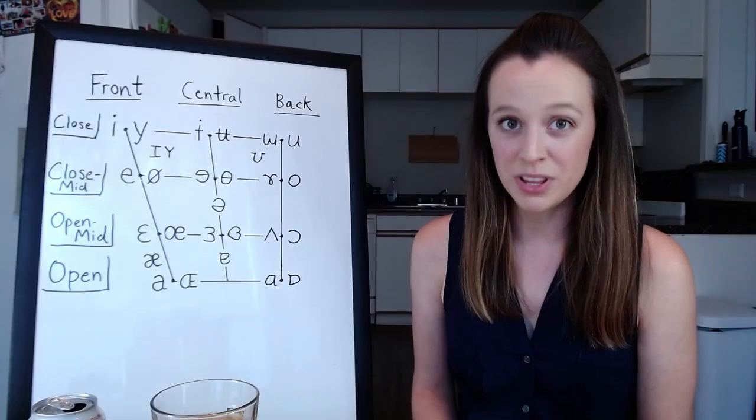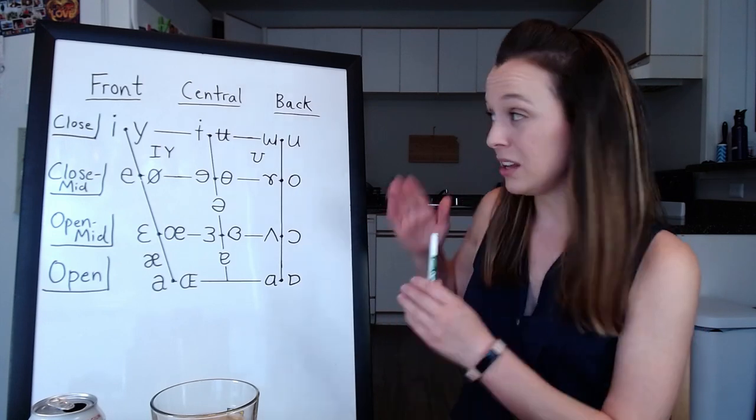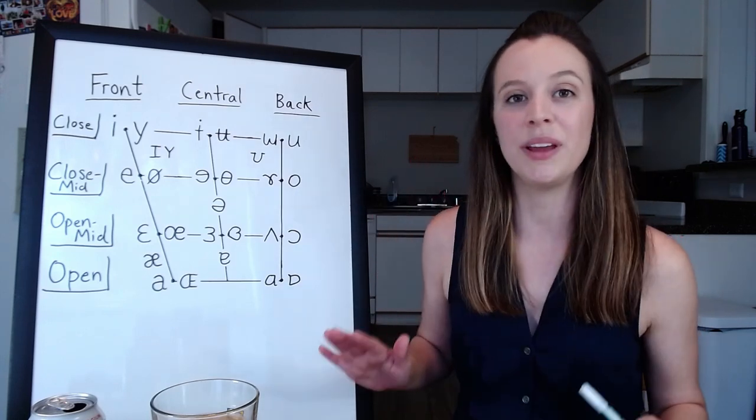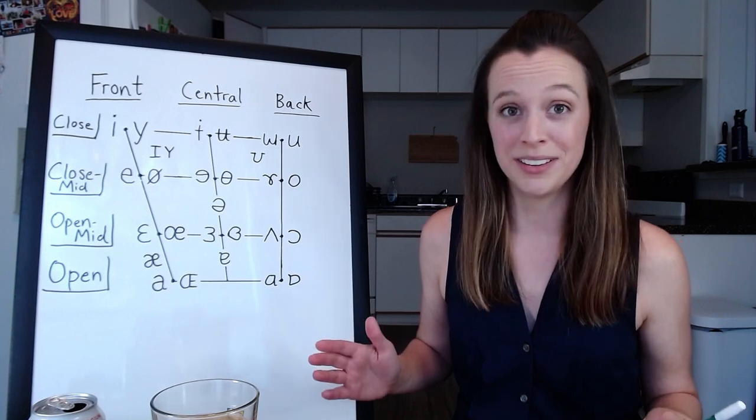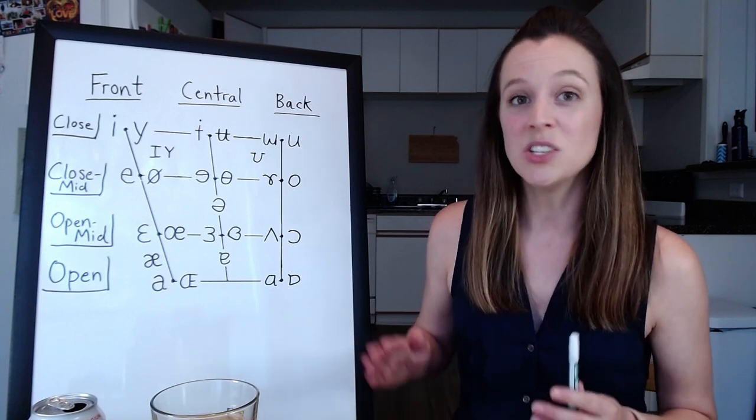So, the vowel quadrilateral. It looks scary, I know, but we're going to break it down because it's actually just a graph. That's how I want you to think about it. So it has two axes.